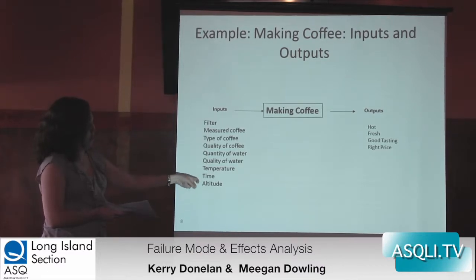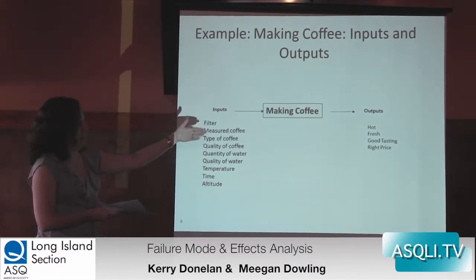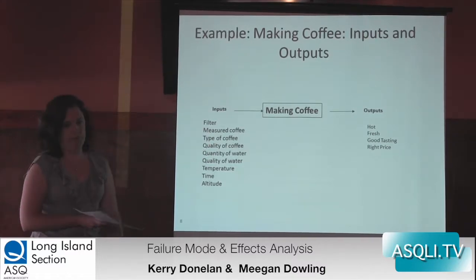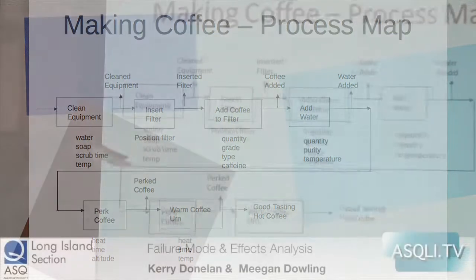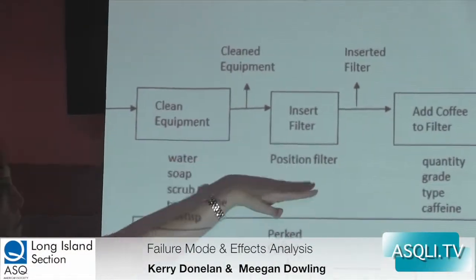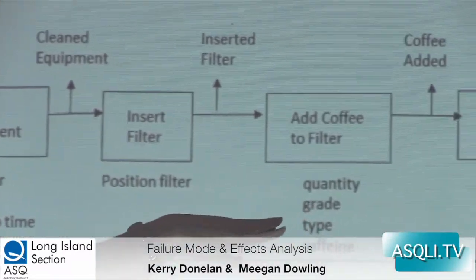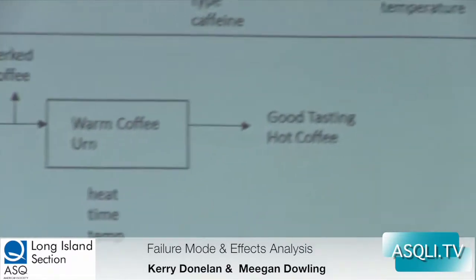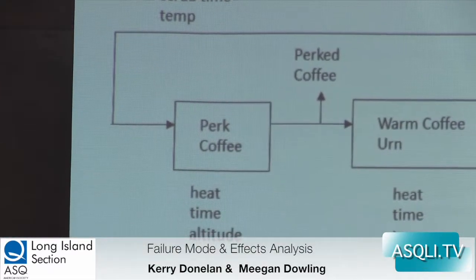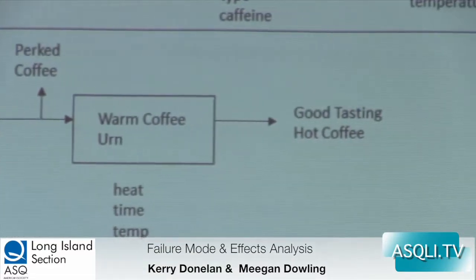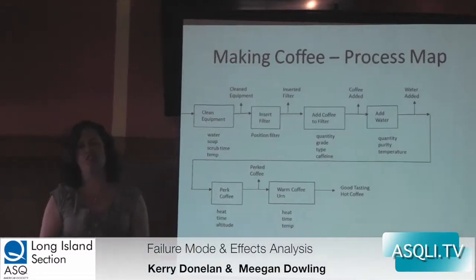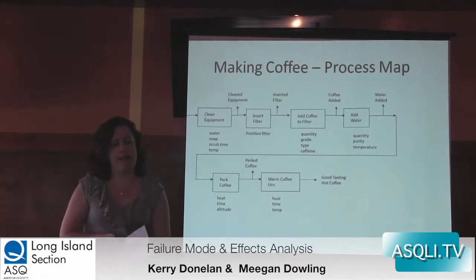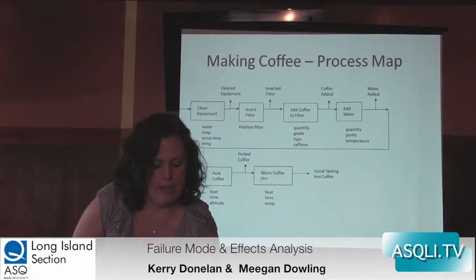Before we get into that second part, let's do an example using making coffee. Some of the inputs and outputs identified: filter, measured coffee, the type of coffee, quality, quantity, quality of the water, temperature of the water, time, altitude. Outputs are going to be hot, fresh, good tasting, right price. Here's a little process map for our example: we clean the equipment, insert the filter, add coffee, add water, perk the coffee, warm coffee urn, and get good tasting hot coffee. This process map shows some inputs and outputs of all the different steps.